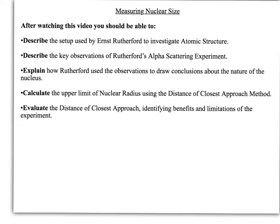In this video I'm going to take a look at measuring nuclear size, and specifically Rutherford's alpha scattering experiment. After watching this, you should be able to describe the setup used in the original experiment, describe the key observations, explain how those observations are used to draw conclusions, calculate an upper bound to the nuclear radius, and evaluate the alpha scattering experiment — identifying its benefits, limitations, and why they moved on to electron diffraction.